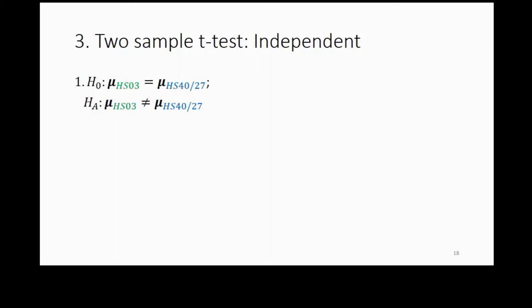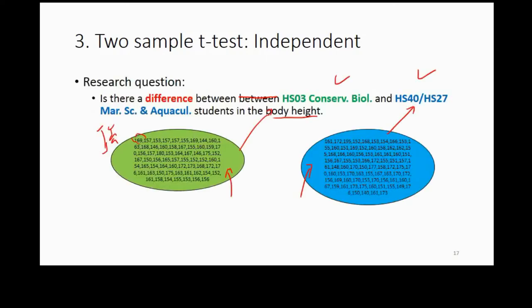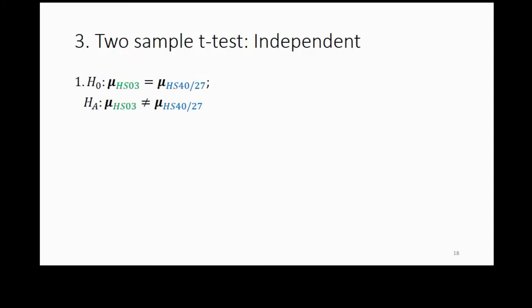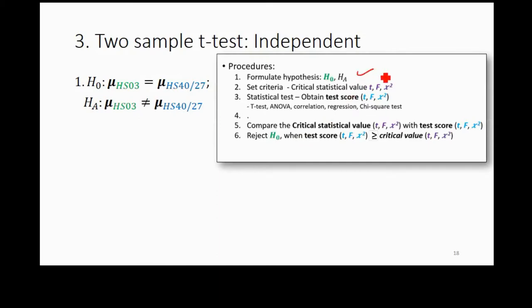The first thing you always do is set the hypothesis — even before you do the sampling. You have your research question already. When identifying the population, always be very specific. After identifying the population, you can formulate your hypothesis. For a two-sample test, the null hypothesis is that the mean height of population one equals the mean height of population two.